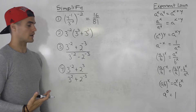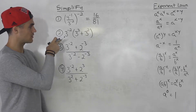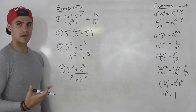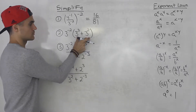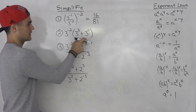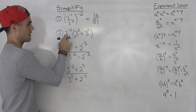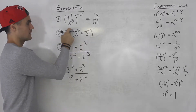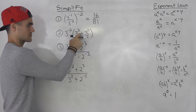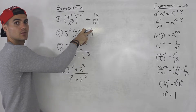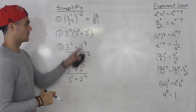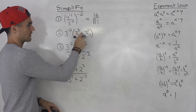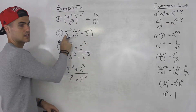Moving on to number two, we've got three to the negative two times three to the power of three plus three to the power of two. So just using BEDMAS, we've got to do the brackets first. Notice how we've had questions like this where all of these were multiplying — if it was three to the negative two times three to the three times three to the two, we would just add up all of the exponents. But we have this addition here and we have this bracket, so we've got to work with this bracket first.